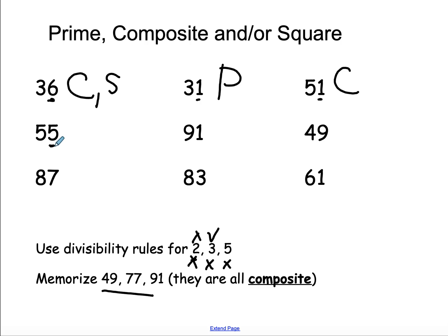55 ends in 5, divisible by 5. It is composite. 91, it's on my memorized list, right there. It is composite.